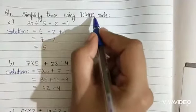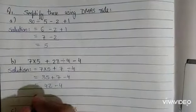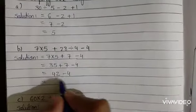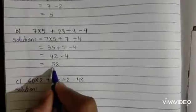Now according to DMAS, at last we subtract. So here subtraction symbol is given, so we subtract. 42 minus 4, 38. So our answer is 38.